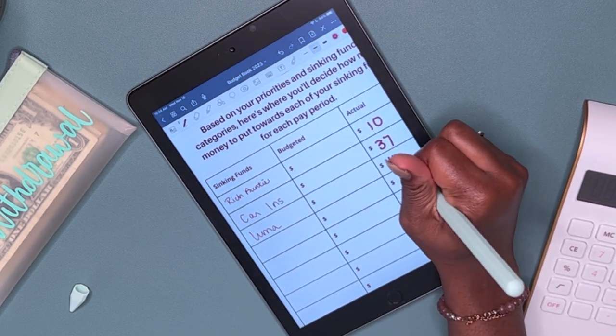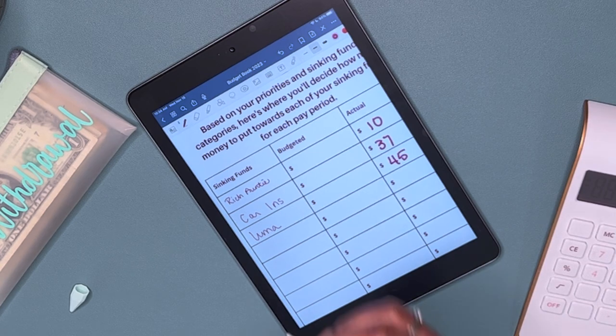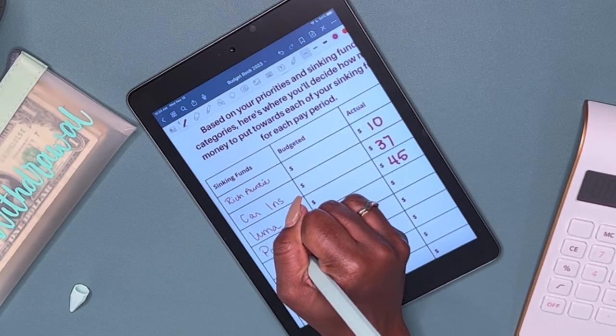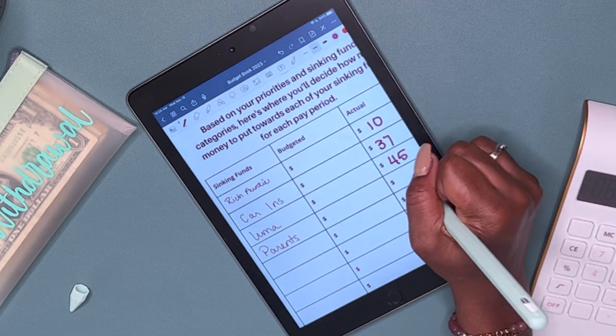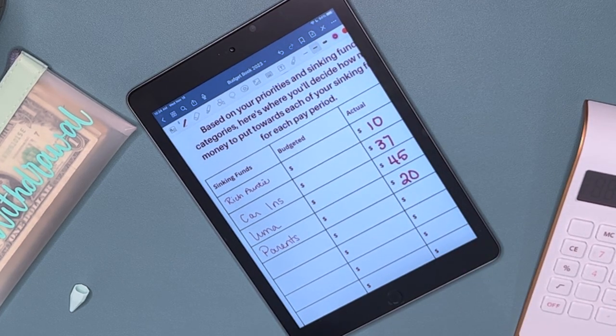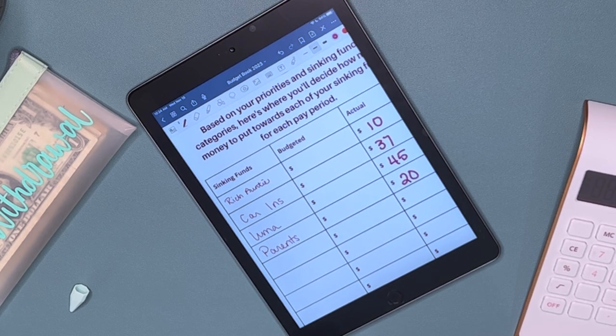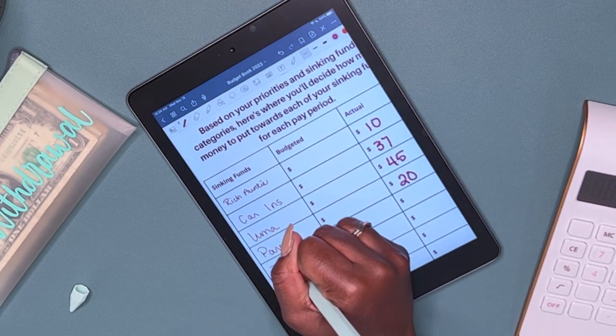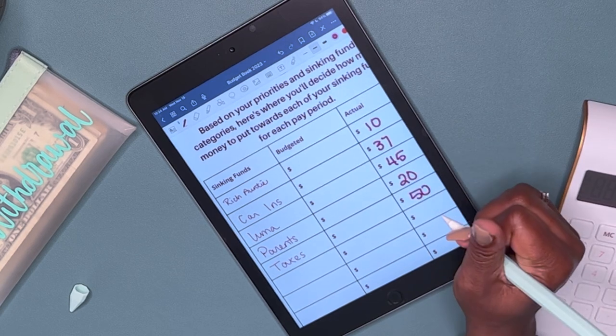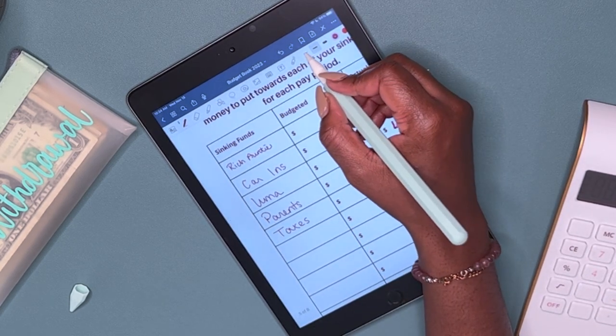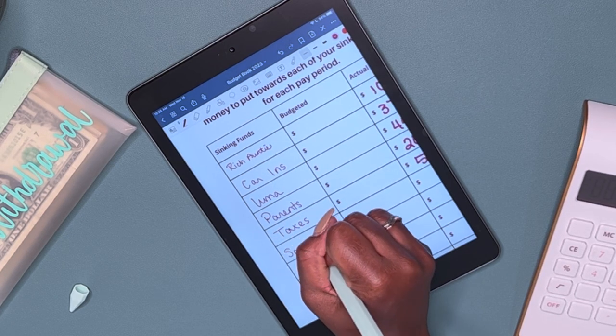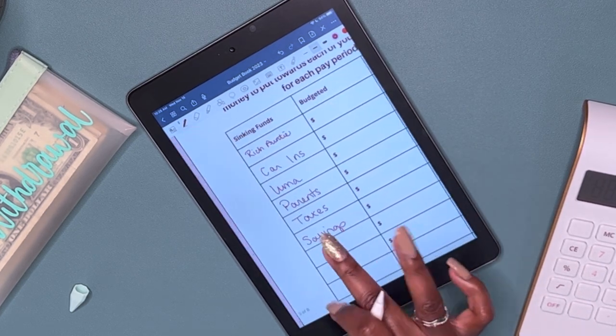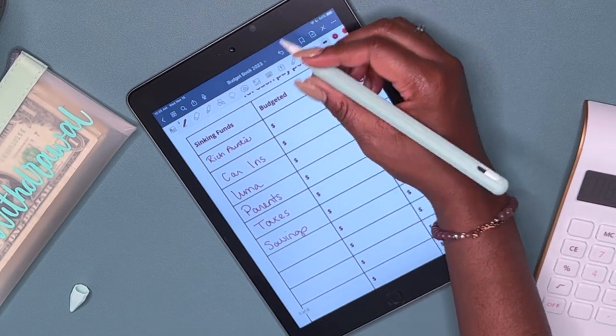Then it's going to be car insurance, that is going to get $37. Next I have Uma, and she's going to get $45. My parents, no matter what I do with my budget, I cannot shortchange my parents, my dog, and the kids. So parents get $20. And then taxes, I can't shortchange IRS either. So taxes will get $50.